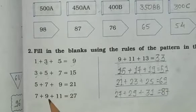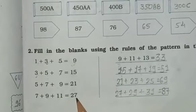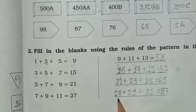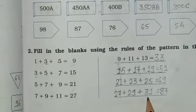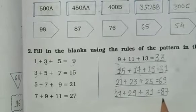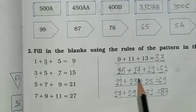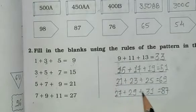After 7 plus 9 plus 11 is equal to 27. Last number is 27. तो यहां first number is 27. 27 plus 29 plus 31 is equal to 87. यह पेटर्न हमारी complete हुई.